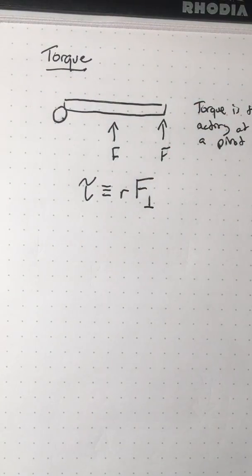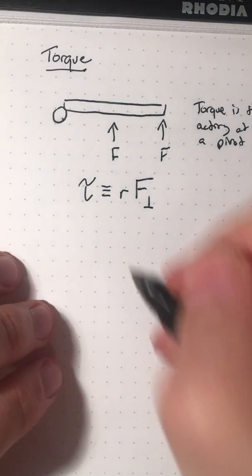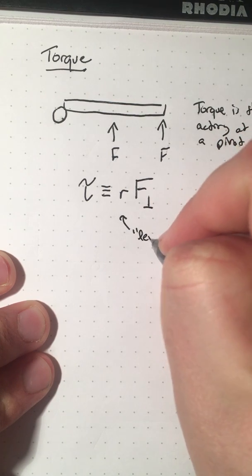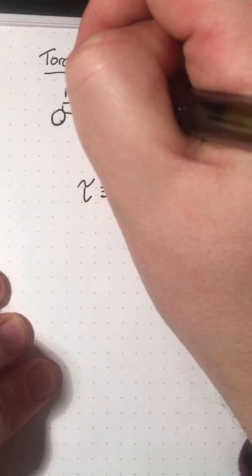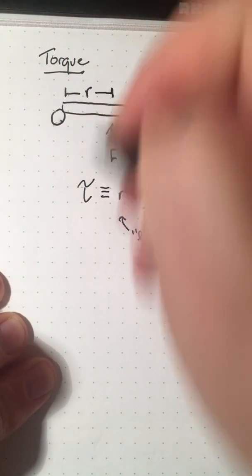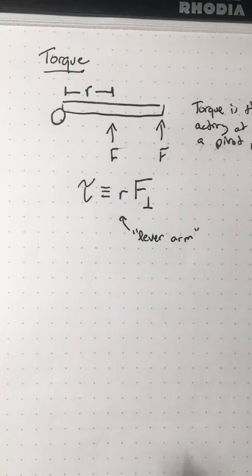We've seen this before, like when we talked about work. Remember when we talked about work, we said work was the force parallel times the distance. Well, torque is the radius times the force perpendicular. And technically this radius has a name. Sometimes we call this radius the lever arm. So you can imagine, if I were applying a force here at a given radius, this radius is the lever arm. If I have a longer lever arm, I can get more torque. If I have a shorter lever arm, I get less torque. So this has all kinds of interesting uses.